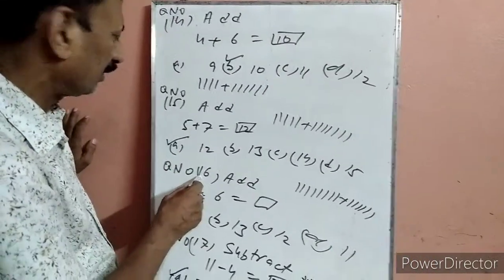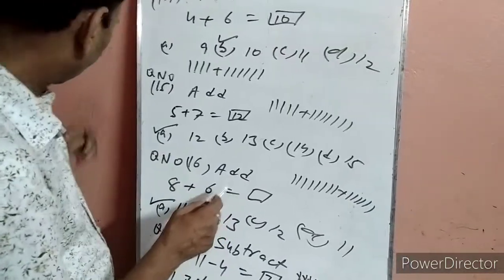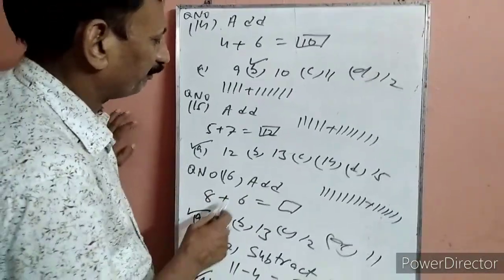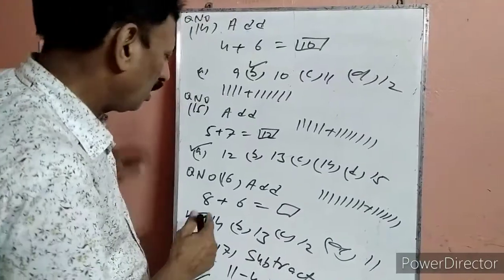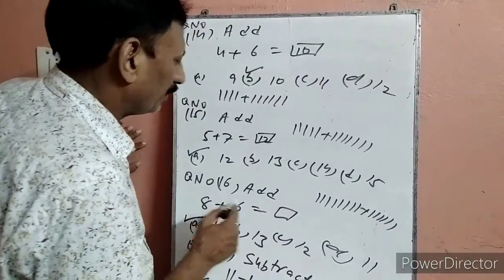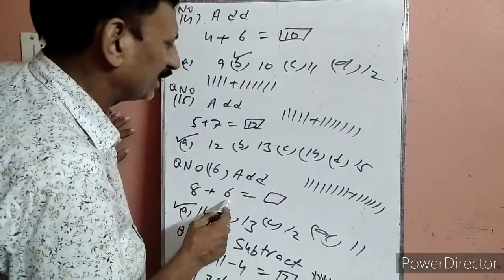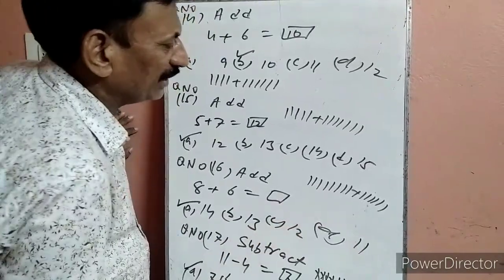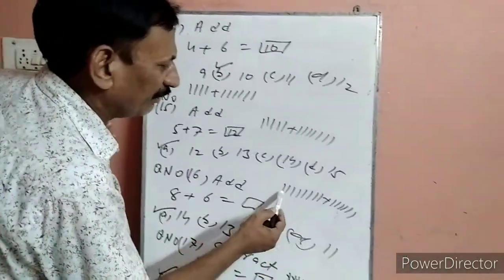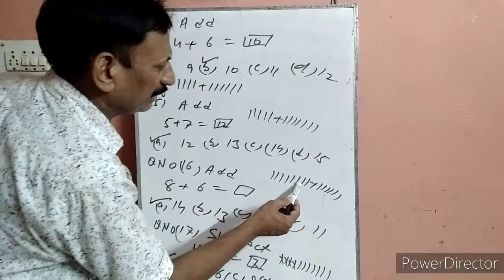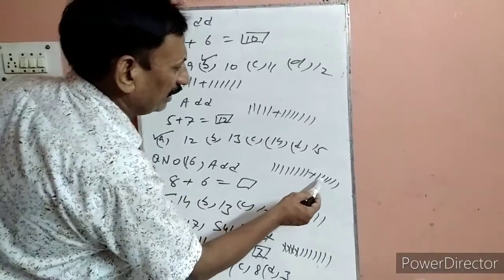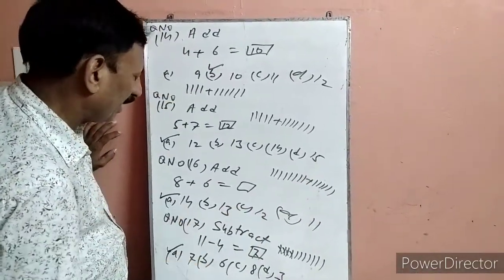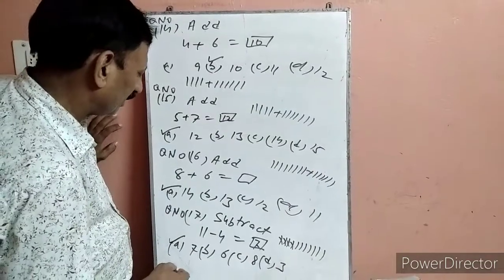Question 16: Add 8 plus 6. 8 line drop करेंगे, 6 line drop करेंगे, सब count करेंगे: 1, 2, 3, 4, 5, 6, 7, 8, 9, 10, 11, 12, 13, 14. Answer 14. 14 कहां पर है — A पर. A पर हमने टिक लगा दिया.